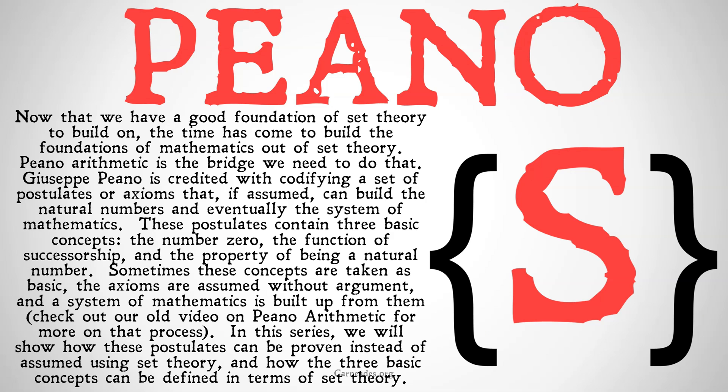Now that we have a good foundation of set theory to build on, the time has come to build the foundations of mathematics out of set theory, to show that math can be built just out of logic. Peano arithmetic is the bridge that we need to do that. Giuseppe Peano is credited with codifying a set of postulates or axioms that, if assumed, can build the natural numbers and eventually the entire system of mathematics.